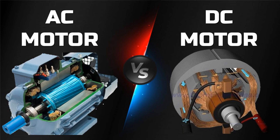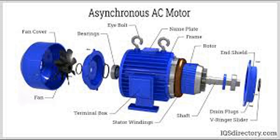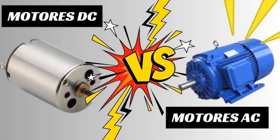In construction and mining, AC motors are used in heavy machinery to crush and grind materials, and are employed in drilling rigs to power rotary drills and related equipment. In robotics and automation, AC motors drive the movements of robotic arms and other automated equipment in manufacturing processes. AC motors also drive various components in MRI machines for medical diagnostics, and are used in electric surgical instruments and other medical devices requiring precise control.